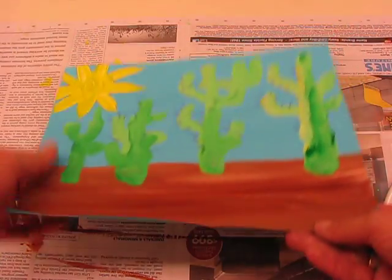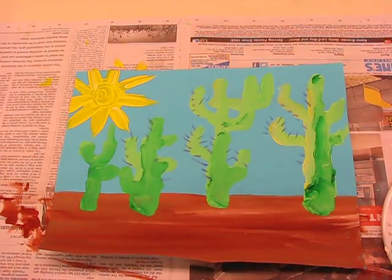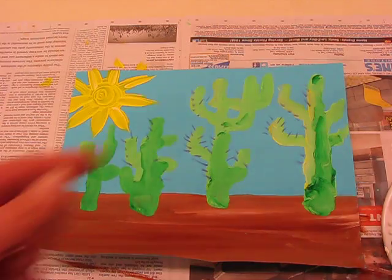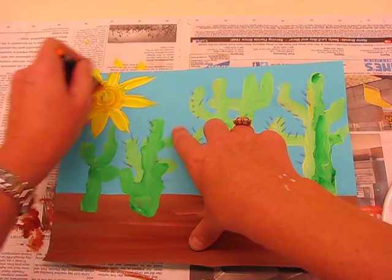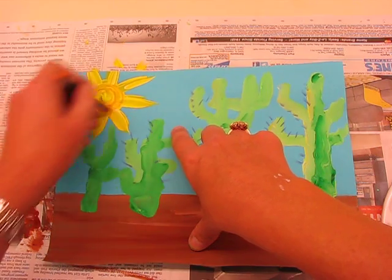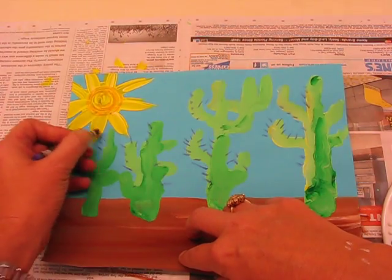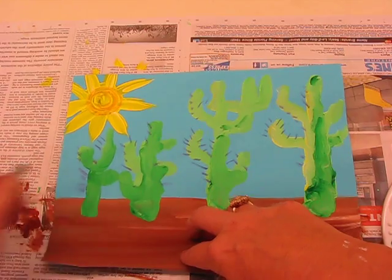Back to my dry one that I've got here, and you can also if you want to, you can add some extra detail now you've got the crayons and everything's nice and dry. I'm going to add some spirals to my sun, a few more prickly spines to my other cactus that's there.